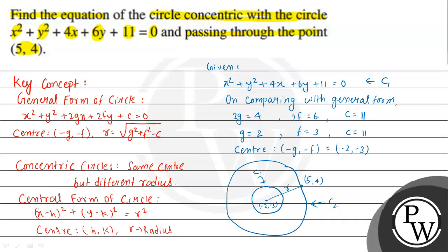Let's suppose O is the center of both circles and point A is (5, 4). We need to find the OA distance, and that distance will be the radius of our required circle.